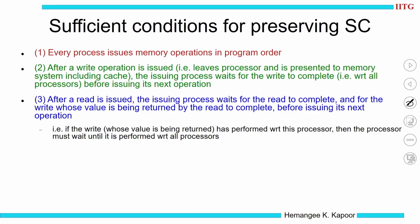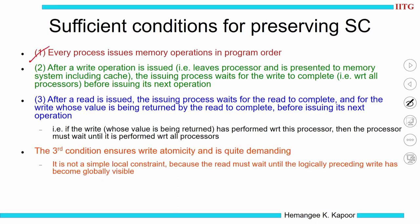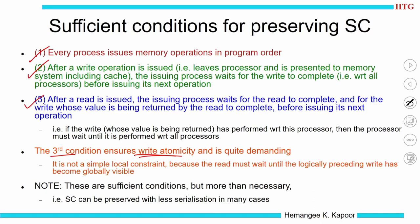In the previous example, when P2 read A equal to 1 it did not wait for P3 to see that value, and that created the problem. The third condition — write atomicity for reads — is quite demanding: program order, wait for writes to complete across the system, and after a read the issuing process waits for the read to complete globally. These are sufficient conditions for preserving sequential consistency, though we can do with slightly lesser serialization constraints, which we will see later.